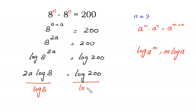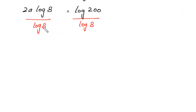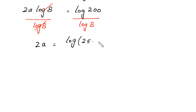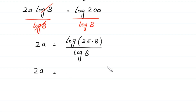From here we divide both sides of this equation by log of 8. This log of 8 cancels with this log of 8, and on the left side we have 2a equal to log of 200 over log of 8. We can write log of 200 as log of 25 times 8 divided by log of 8. According to the log property, log of a times b is equal to log of a plus log of b.